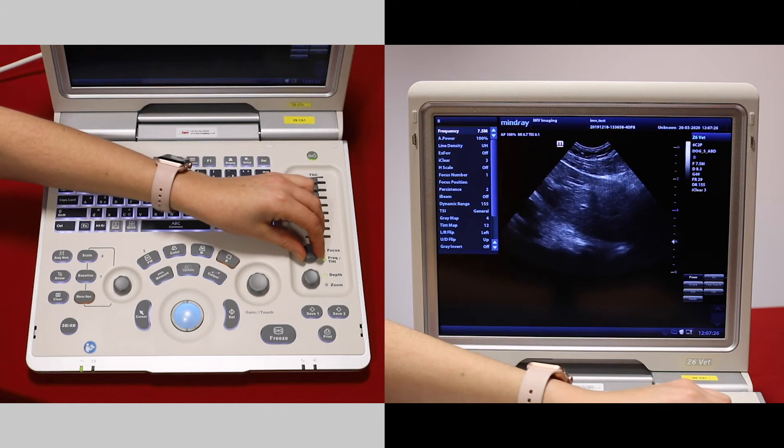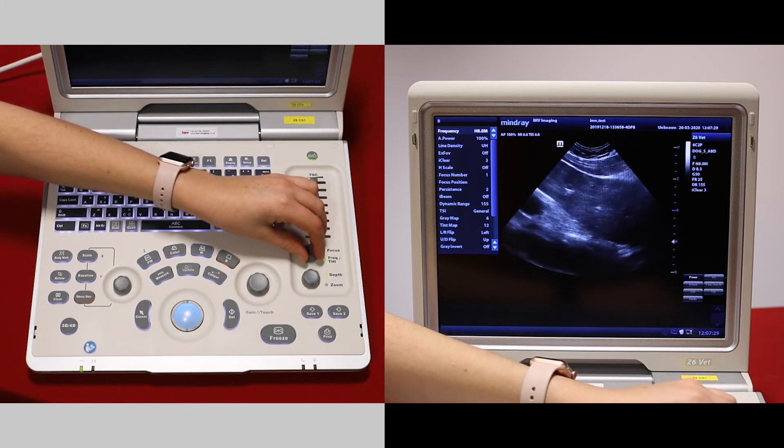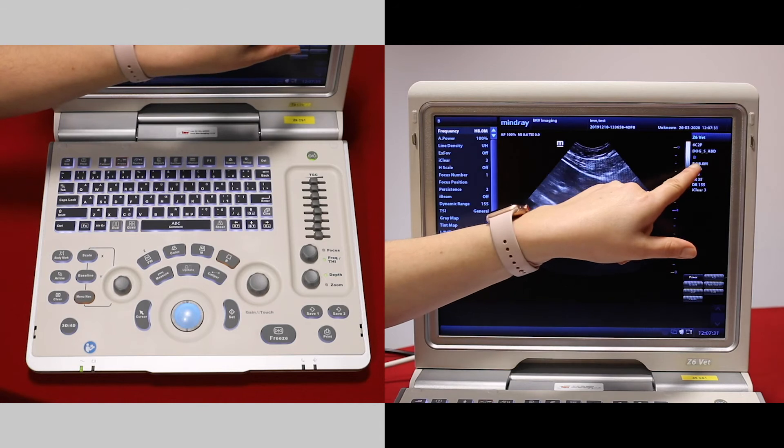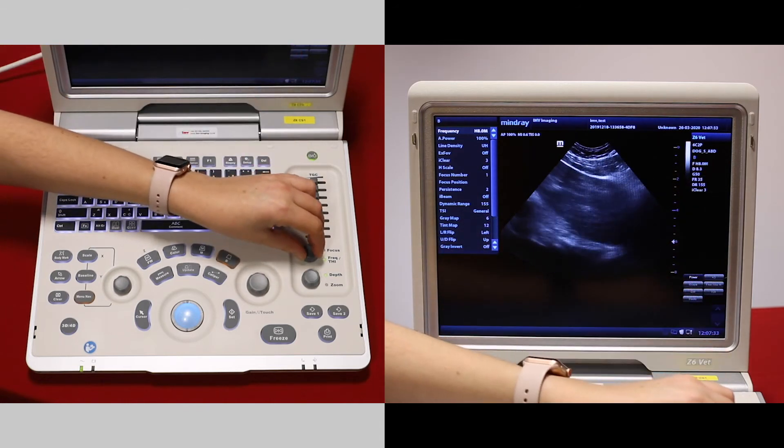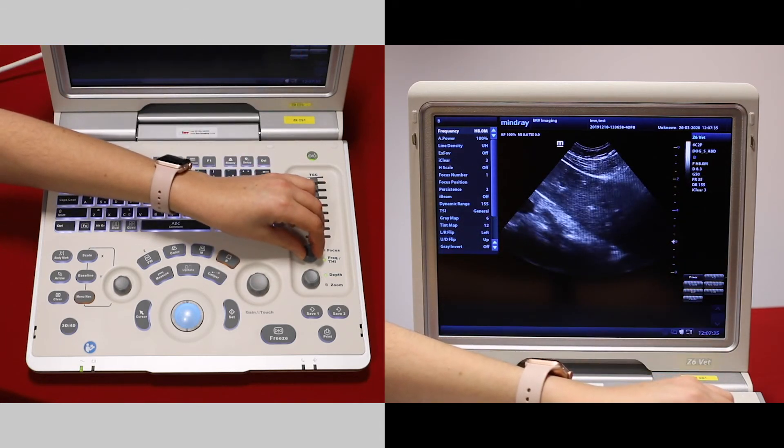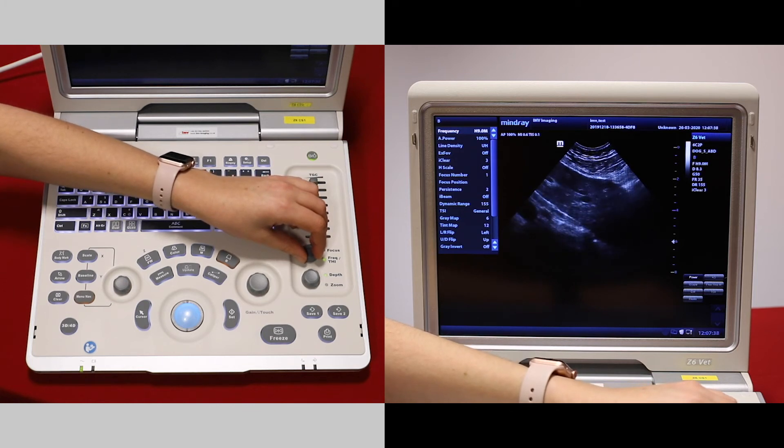If we go higher than the normal 8.5 megahertz, we will enter harmonic imaging which has a little 'h' in front of the number. This gives the image a slightly different look and we can go up to 9 megahertz.